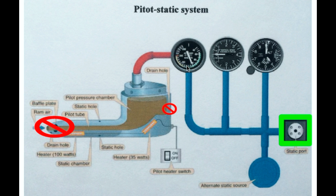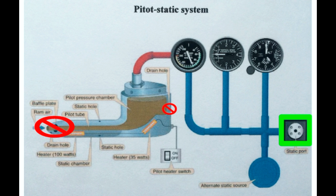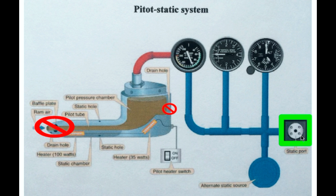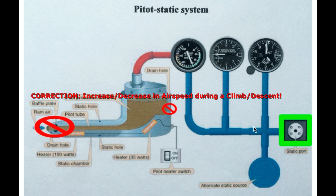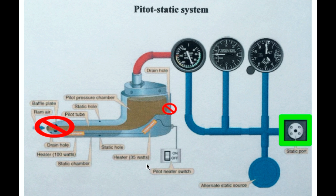During a descent, increasing air density means increasing pressure in the case, which acts upon the diaphragm and causes it to contract — resulting in a decreasing airspeed indication. This is the opposite of what would normally happen in a descent without a power change. In summary, when both the pitot tube and drain hole are blocked, the airspeed indicator behaves like an altimeter: showing increasing airspeed in a climb and decreasing airspeed in a descent.